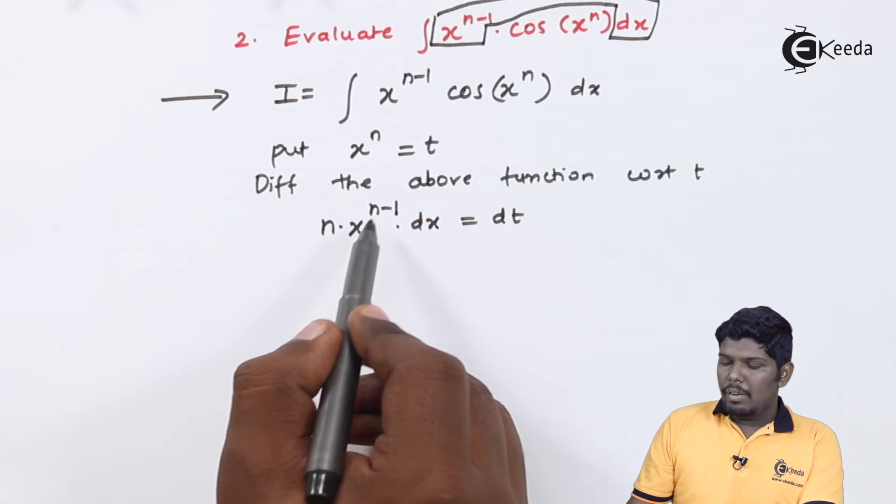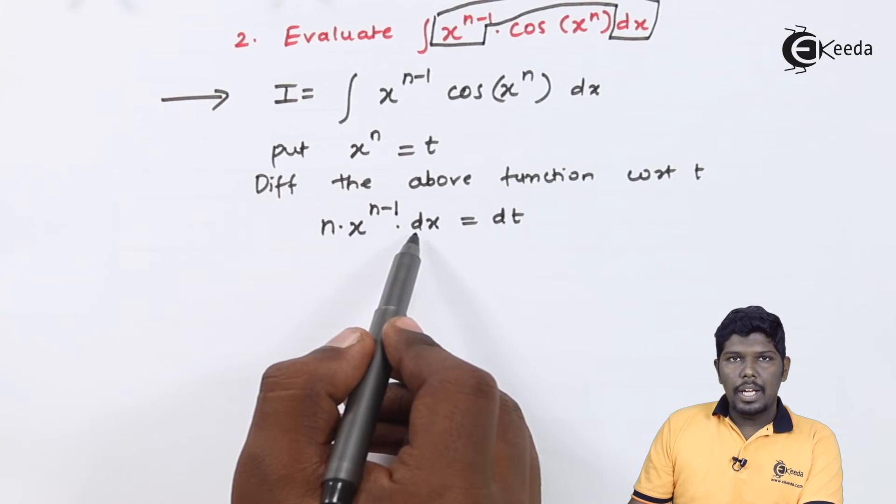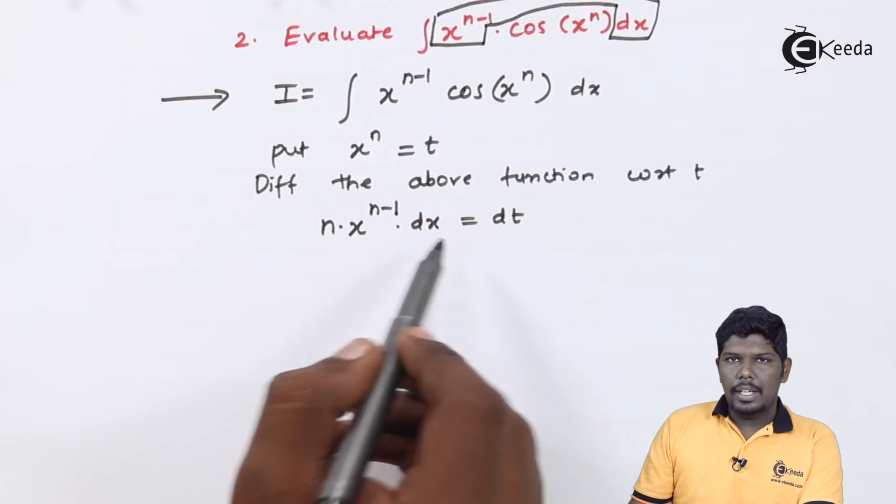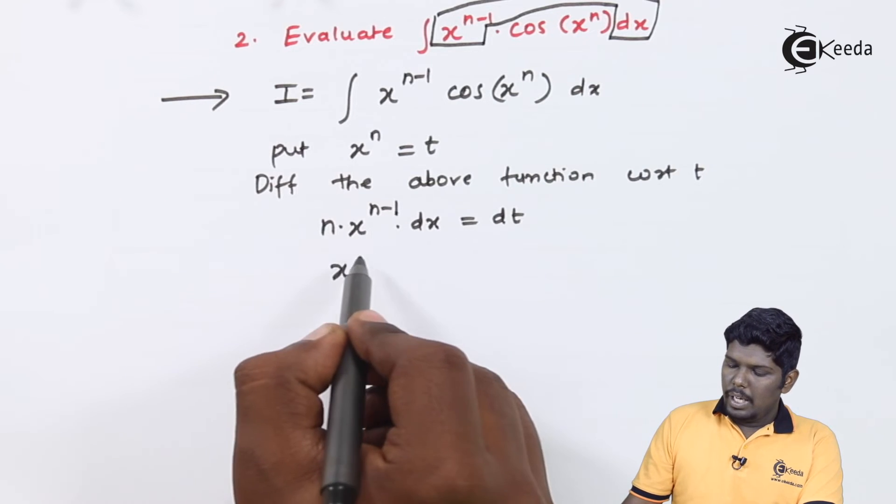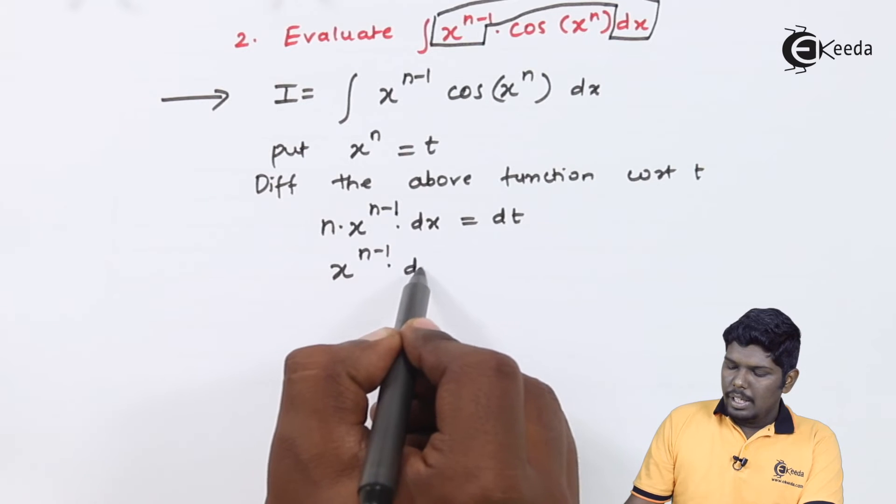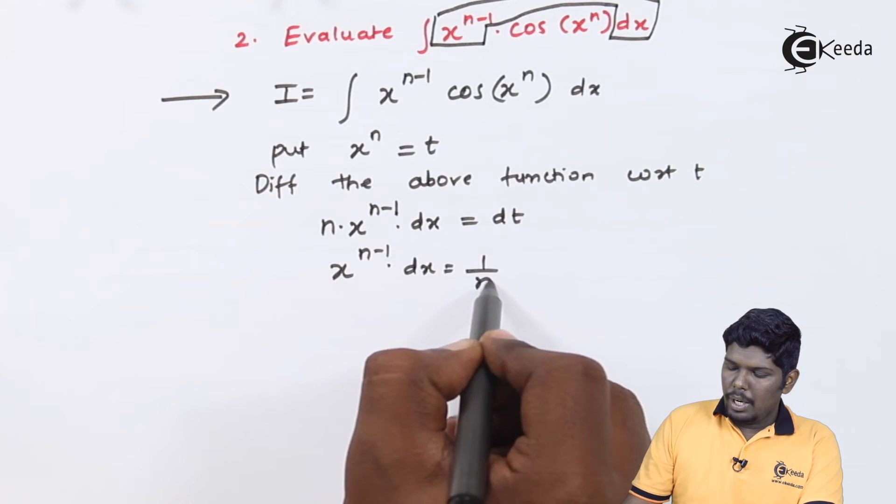Here you can see we have x raise to n minus 1 and also dx. The extra part n can be transferred on the right hand side. That will give you x raise to n minus 1 into dx as 1 upon n dt.